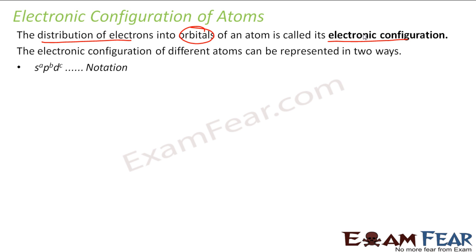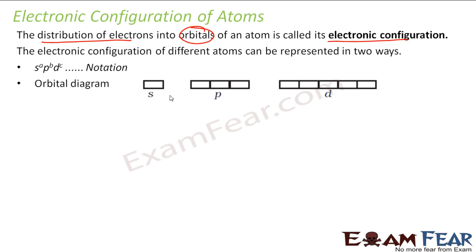The electronic configuration can be represented in two ways. One is SPDF notation, where you say S subshell has this many electrons, P subshell has this many, D subshell has this many electrons. Or you can create the orbital diagram — S subshells, P subshells with 3 orbitals, D subshells with 5 orbitals. The SPDF notation is generally used because it is easy to write rather than drawing so many boxes, so it is more in fashion.